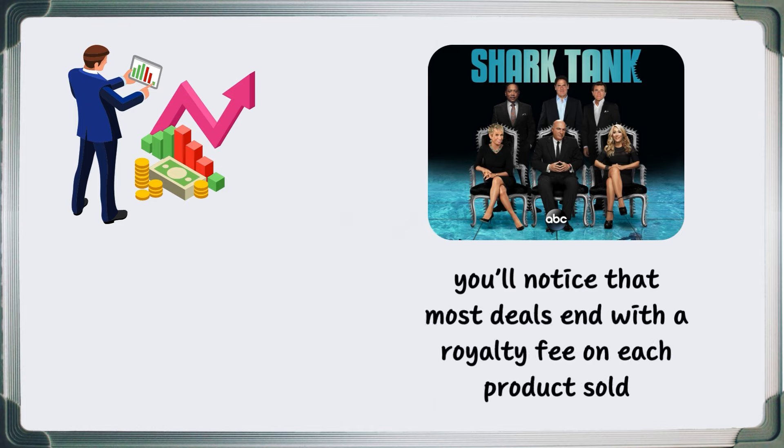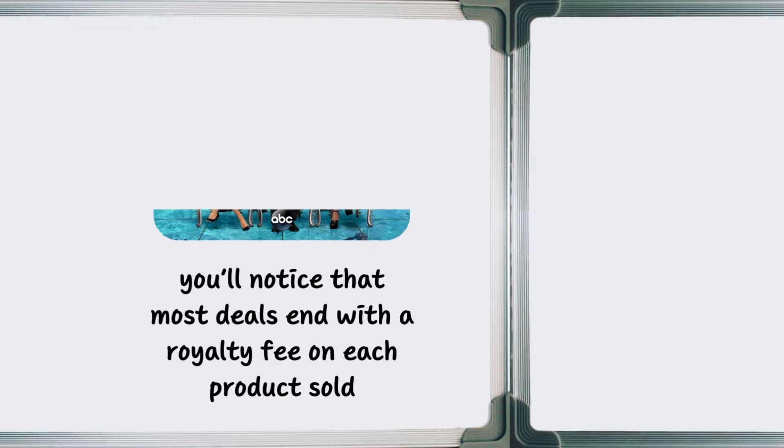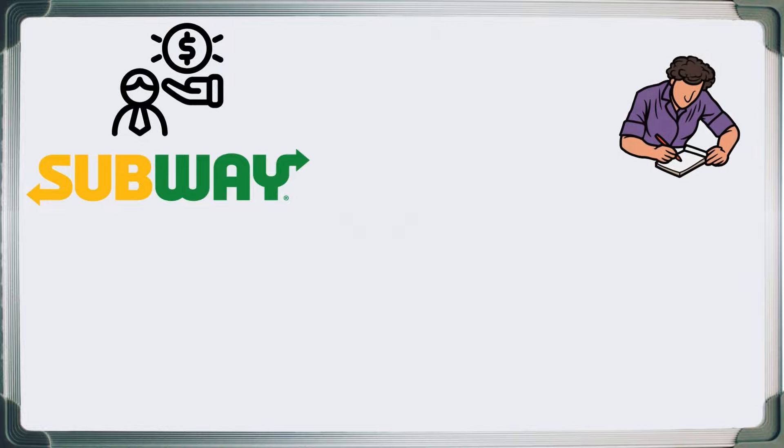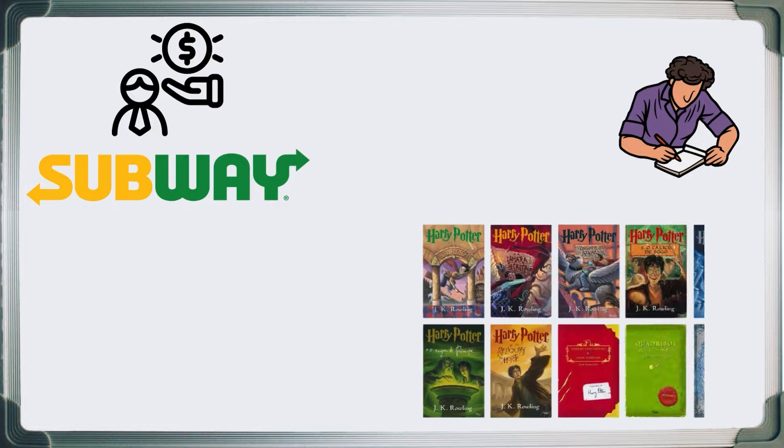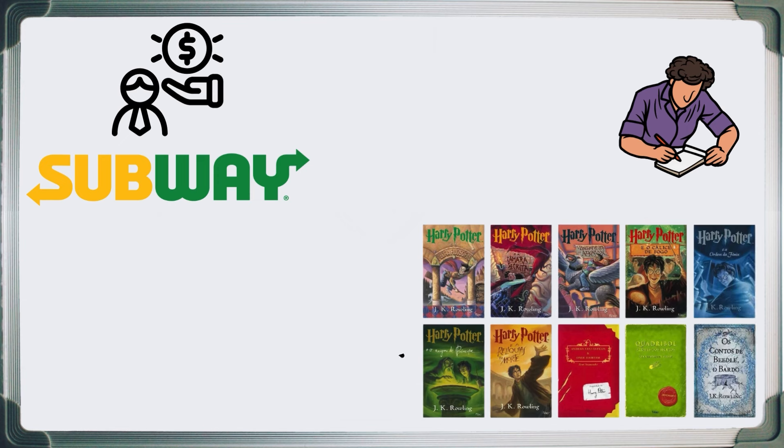Another example applies to franchises. If you open a Subway franchise, you'll pay annual royalties for using their process, strategies, and logo. Writers receive payment for each book sold by publishers. Another significant example is J.K. Rowling's earnings from the Harry Potter series. She gets paid for the use of her book characters in movies or other mediums.